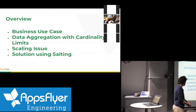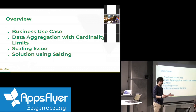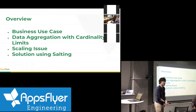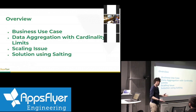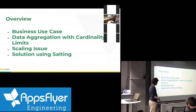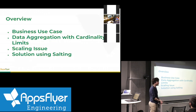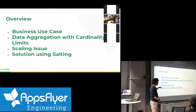This shouldn't take too long, and feel free to interrupt me with any questions as I go because I'm happy to talk about anything that comes up. Basically I'm going to go through the data flow and what the business use case is that we're trying to solve, and roughly how we do that, and then a scaling issue that we hit with this problem. It's great working at AppsFlyer — we get to hit scaling issues all the time. They come from places you don't expect. And then a solution to this problem using something called salting, which I'll tell you all about.